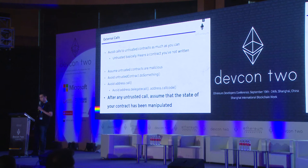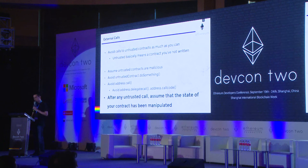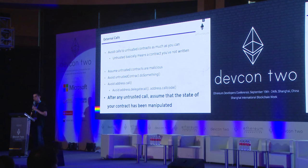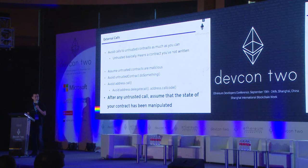Contracts calling each other is powerful and can lead to emergent use cases, but care must be taken for external calls. The recommendation is to avoid calls to untrusted contracts as much as you can. Untrusted means any contract that you have not written, because if you call someone else's contract, they or one of their dependencies could accidentally call a malicious contract. In the chain of contract calls, all it takes is for one contract to make a mistake. Assume that untrusted contracts are malicious, avoid calling address.call on an untrusted contract, and after any untrusted call, assume that the state of your contract has been manipulated.